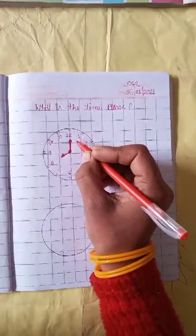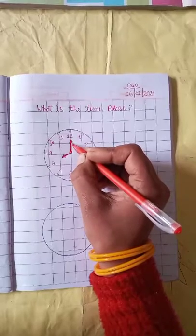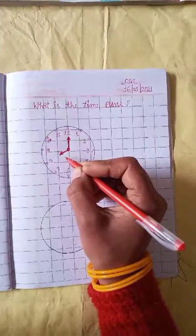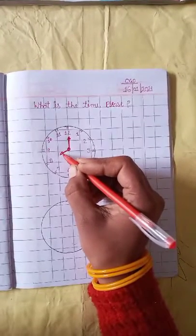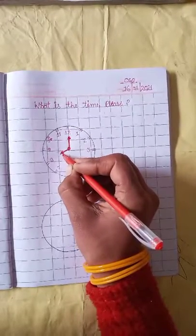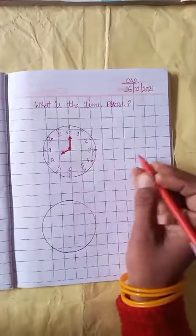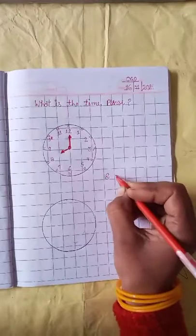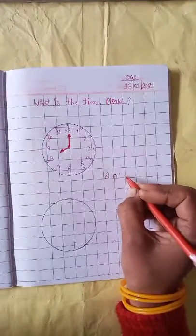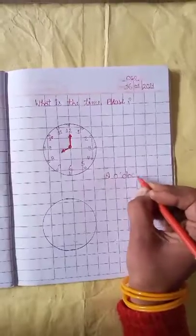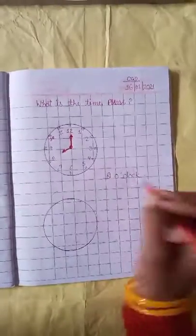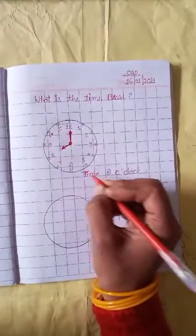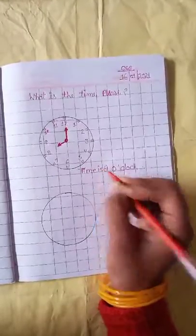The long hand is at twelve. The short hand is the hour hand and it is at eight. Time is eight o'clock. Time is eight o'clock. Eight o'clock. Time is eight o'clock. Next.